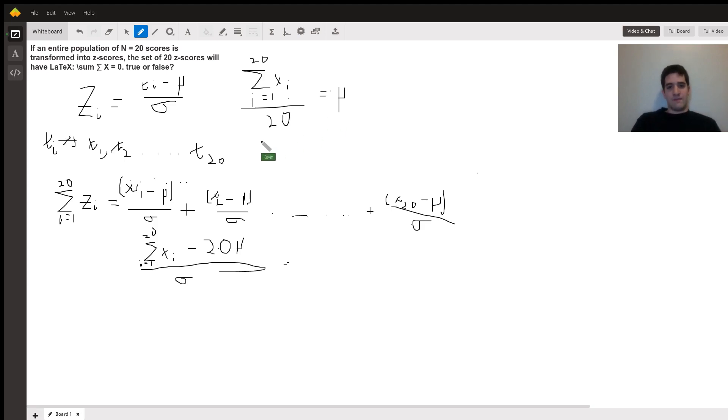Okay, that out of the way, we'll say sum from i equals 1 to 20 of xi is equal to 20 mu. Therefore, we can plug this value of 20 mu into this expression here. And we get 20 mu minus 20 mu all over sigma. And this is 0.